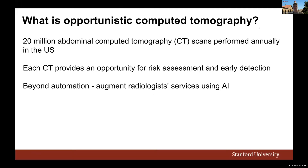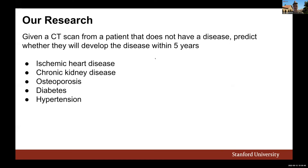What is opportunistic CT? There are 20 million abdominal CT scans performed annually in the US. These CT scans are very information-dense — they're 3D volumes of the abdomen — so each presents an opportunity for risk assessment and early detection of diseases. Our goal is to go beyond what radiologists currently do, moving toward augmentation rather than just automation.